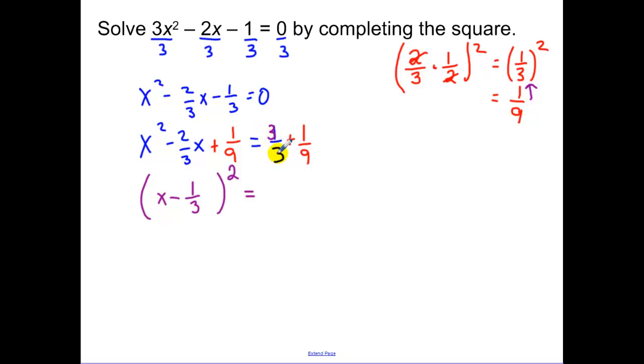Then 1 third plus 1 ninth. Well, 1 third is like 3 over 9, so we get 4 over 9. Now we square root both sides. Now, underneath this radical, that's going to simplify to a 2 thirds.